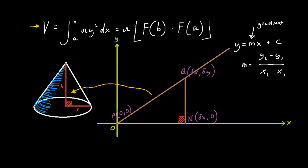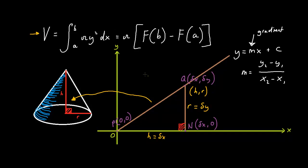This right-angled triangle has a height and also a radius, just like the cone. From point P to point N we have the height, and from point N to point Q we have the radius. This height is in fact Δx, and this radius is Δy. So point Q actually has the coordinates (h, r). I'm looking for the value of y — its exact value — so that I can integrate and find the formula for volumes of cones.